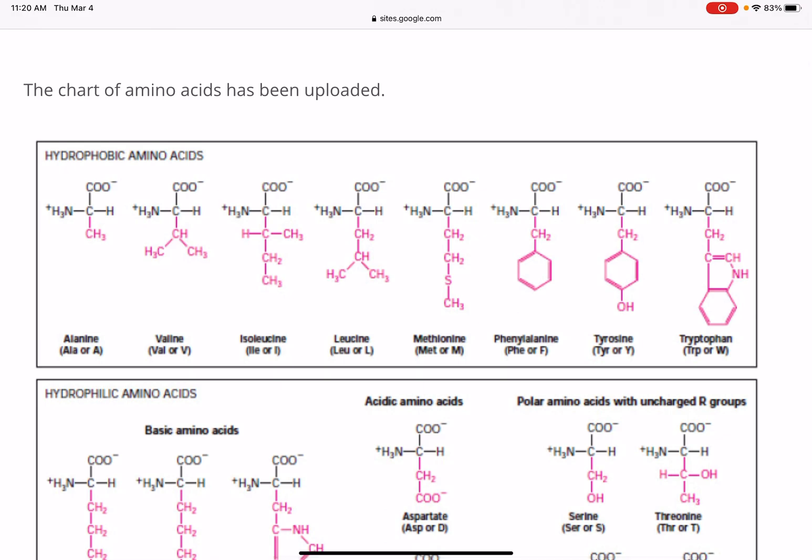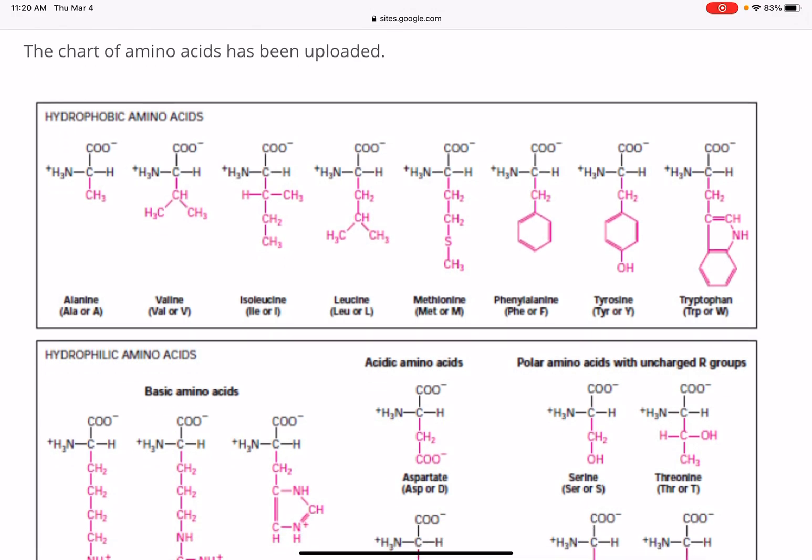In addition to that, underneath each amino acid, it's listing the name of the amino acid. And then in parentheses, there are two different abbreviations. Amino acids are known by three-letter abbreviations. And they're also known by a single-letter abbreviation.